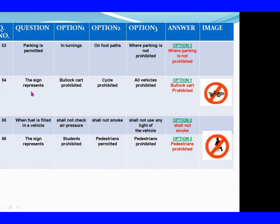Question 54: The sign represents. Option 1: Bullock cart prohibited. Option 2: Cycle prohibited. Option 3: All vehicles prohibited. The right answer is Option 1: Bullock cart prohibited. Question 55: When fuel is filled in a vehicle. Option 1: Shall not check air pressure. Option 2: Shall not smoke. Option 3: Shall not use any light of the vehicle. The right answer is Option 2: Shall not smoke.